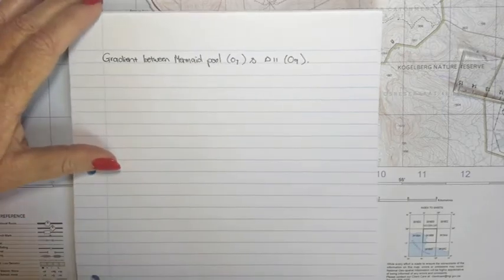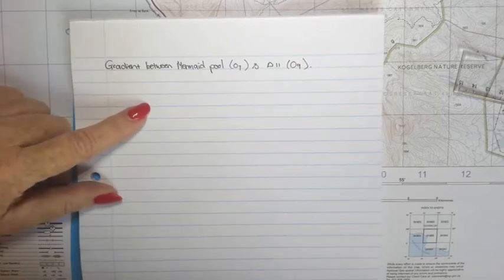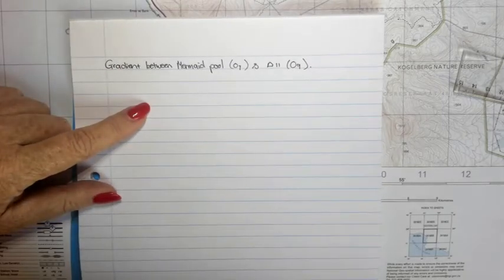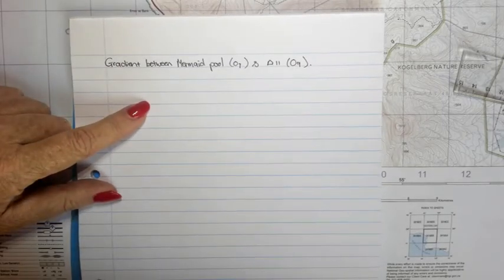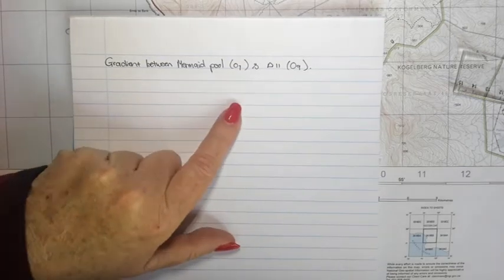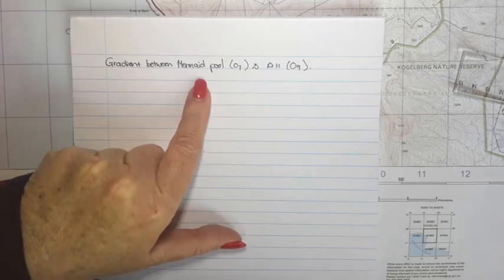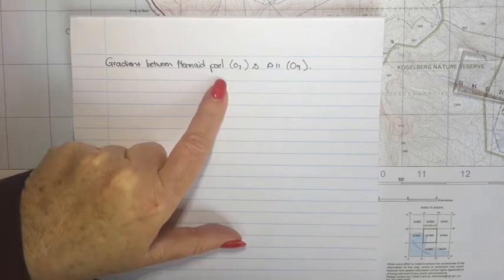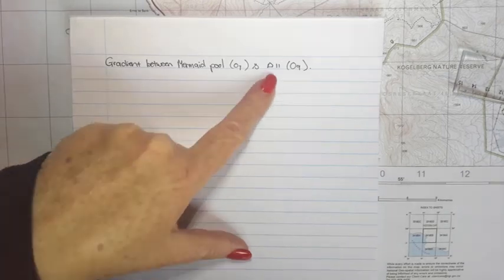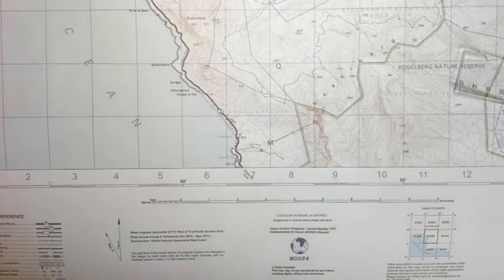The second example of calculating a gradient is one where you can easily determine one height but have to take an estimated guess of the other. We need to calculate the gradient between the Mermaid Pool and Trig Beacon 11. I need to zoom in so you can see the difference.